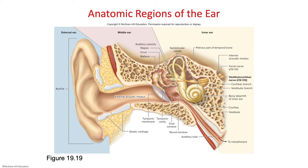The auditory ossicles are the malleus, incus, and stapes. The malleus is attached to the tympanic membrane, the incus is in the middle, and the stapes looks like a stirrup. The auditory tube drains into the nasopharynx and helps equalize pressure when you go to high altitudes or swim deep underwater. The inner ear is filled with fluid and is made up of the vestibule, semicircular canals, and the cochlea. The vestibule is made up of the utricle and saccule, which help with balance and equilibrium.